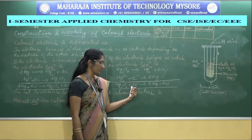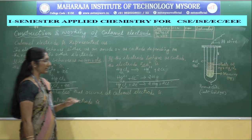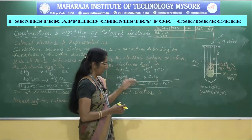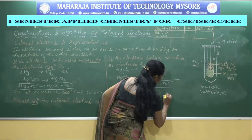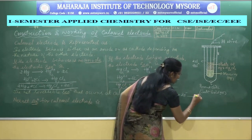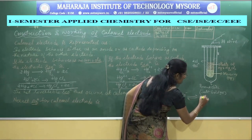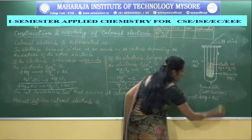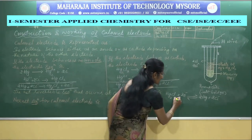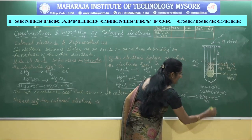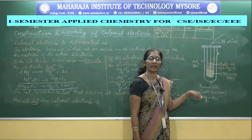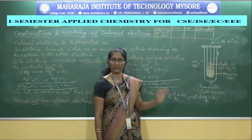These two reactions are reversible, so the net reversible reaction taking place at the calomel electrode is: Hg₂Cl₂ + 2e⁻ ⇌ 2Hg + 2Cl⁻. Since Hg₂Cl₂ is a solid and Hg is a liquid, the only variable is the concentration of chloride ions. Therefore, the calomel electrode is reversible with respect to chloride ions.